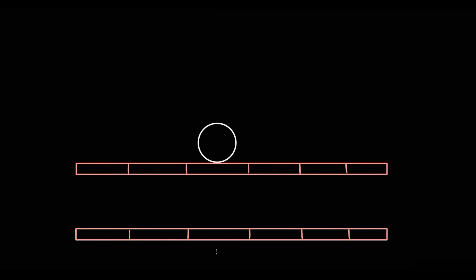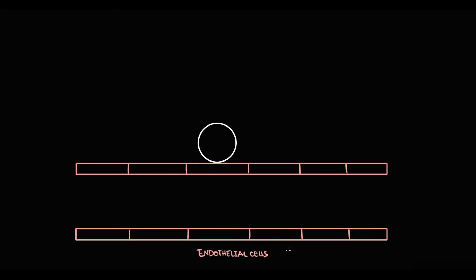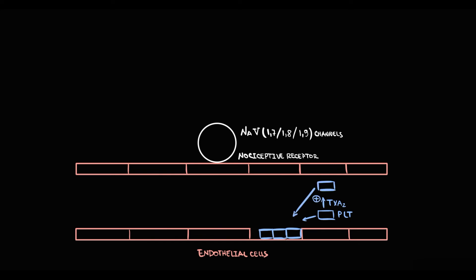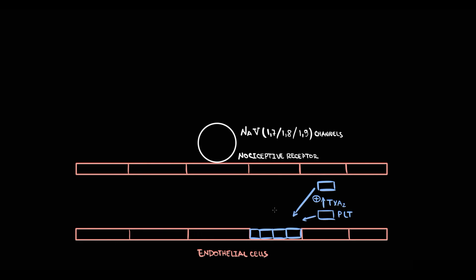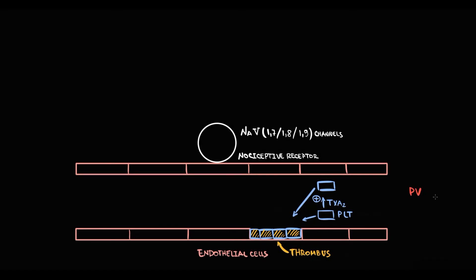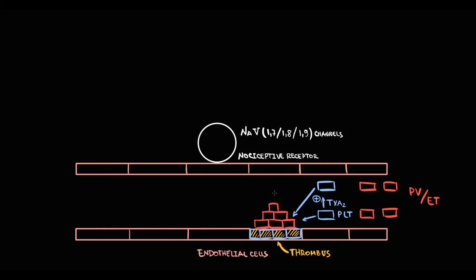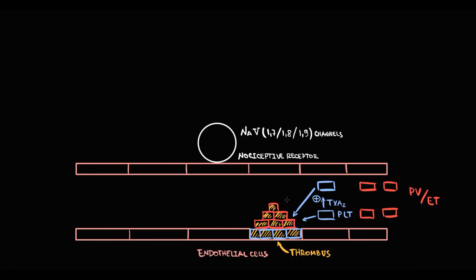To explain erythromelalgia: blood vessels have nociceptive receptors, including voltage-gated sodium channels. Normally, if endothelial injury occurs, platelets come to the site, adhesion and aggregation occur, forming a small platelet plug from which secondary hemostasis makes a thrombus. But in polycythemia or essential thrombocytosis, platelet count becomes extremely high — the higher the platelet count, the more reactive primary hemostasis becomes. In response to endothelial injury, a significantly bigger platelet plug forms, from which secondary hemostasis creates a much bigger thrombus.